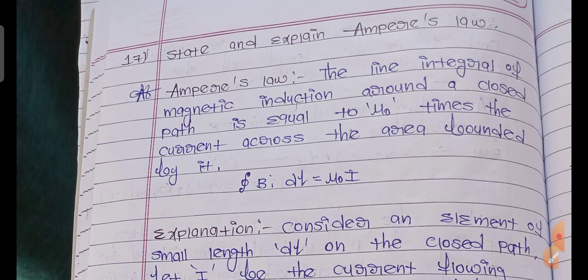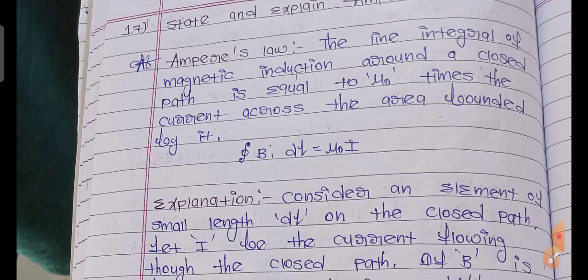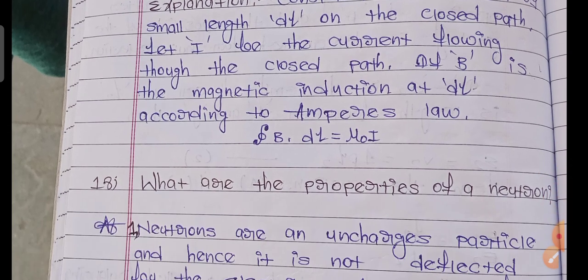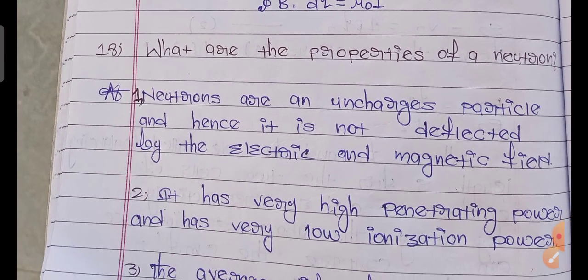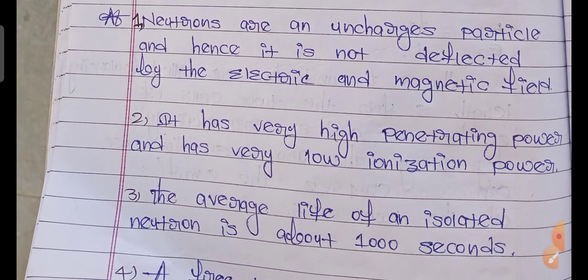There are so many laws in physics and chemistry — repeated questions — you can go through those. Ampere's law explanation. 19th question: what are the properties of the neutron — you can go through that.